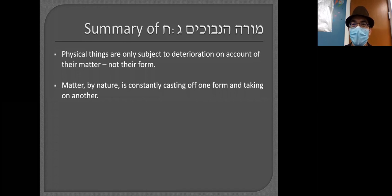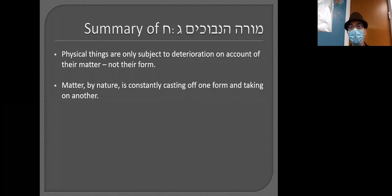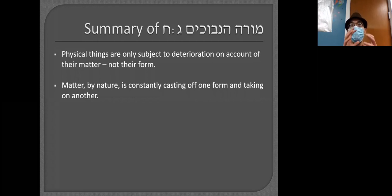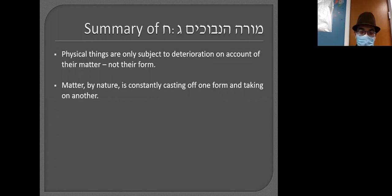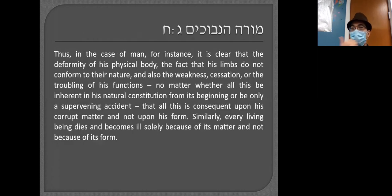Some things take a long time for that process to happen — stone doesn't deteriorate very quickly, diamonds barely deteriorate at all — but everything deteriorates. It's just a question of the rate. Deteriorating means breaking away from its form and becoming something else. You can do it by nature or by force: when you eat an apple, you are violently ripping the matter away from the form of apple and making it into the matter of you.